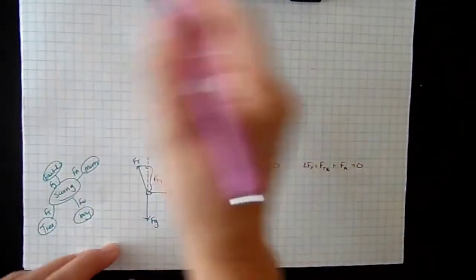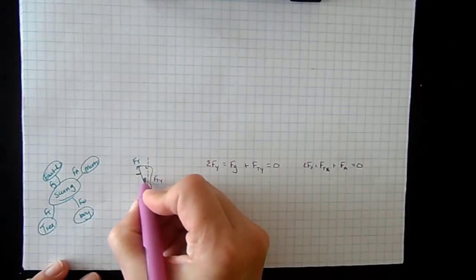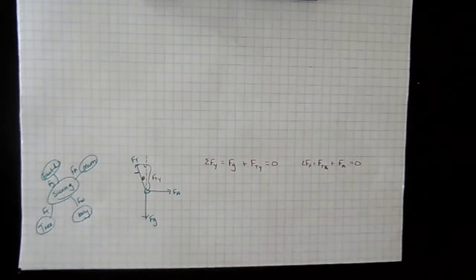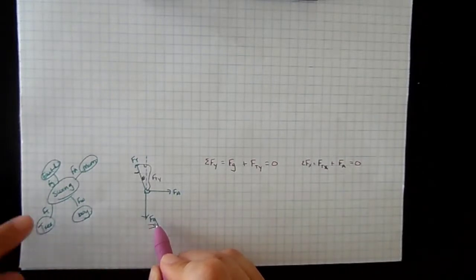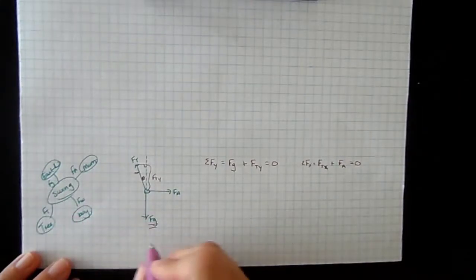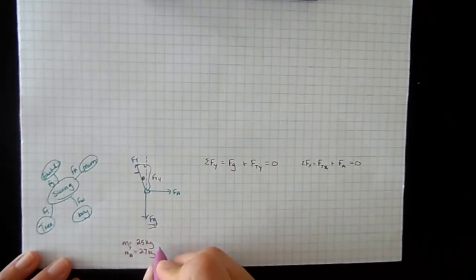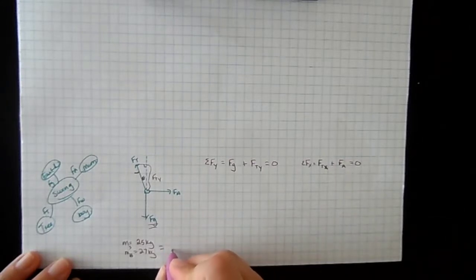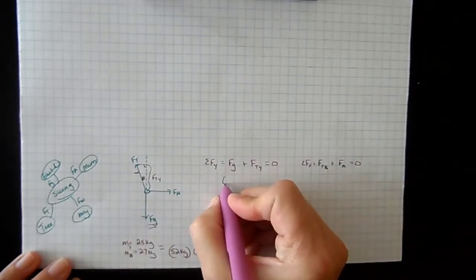This angle with the tree was 18 degrees. We're looking for the tension in the rope, so the only thing we really know is the force of gravity. We don't know how much force mom is applying — we only know the masses. The mass of the swing was 25 kilograms and the mass of the boy was 27 kilograms, giving a total mass of 52 kilograms.